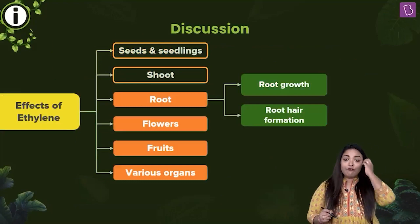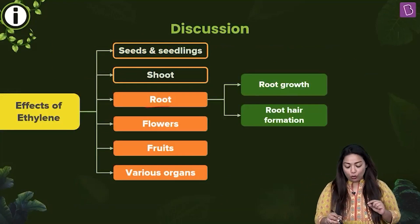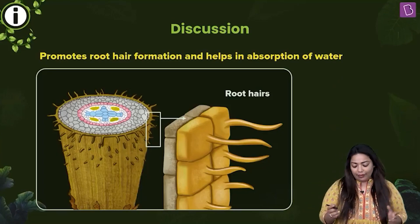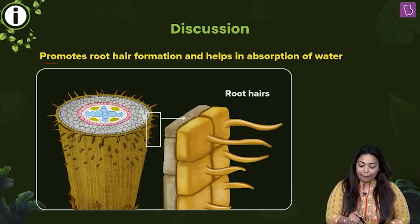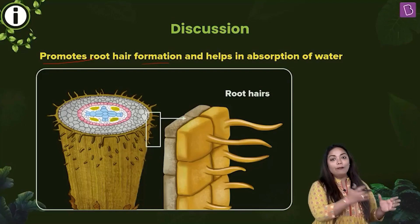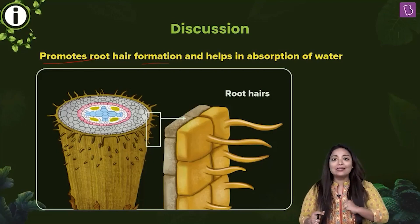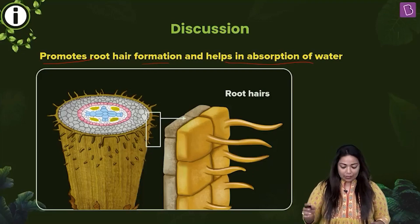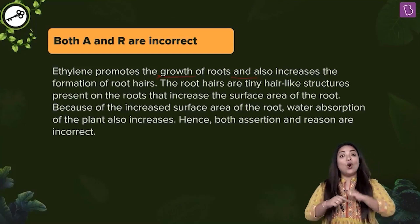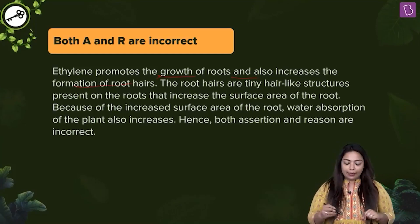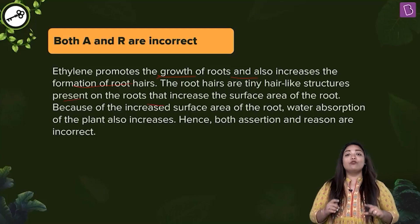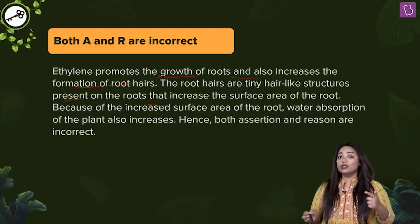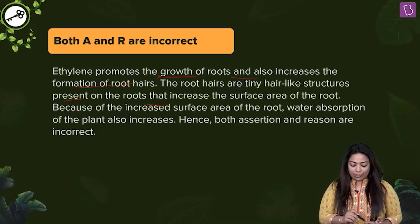When you look at the functions of Ethylene, in roots it promotes root growth and root hair formation — it doesn't inhibit it. How does it help in water absorption? Ethylene promotes root hair formation, and when root hairs are formed, they absorb water because that's their function, thereby promoting — not reducing — water absorption. Root hairs are tiny hair-like structures on the roots which increase the surface area, so water absorption increases. Hence, both assertion and reasoning are incorrect.